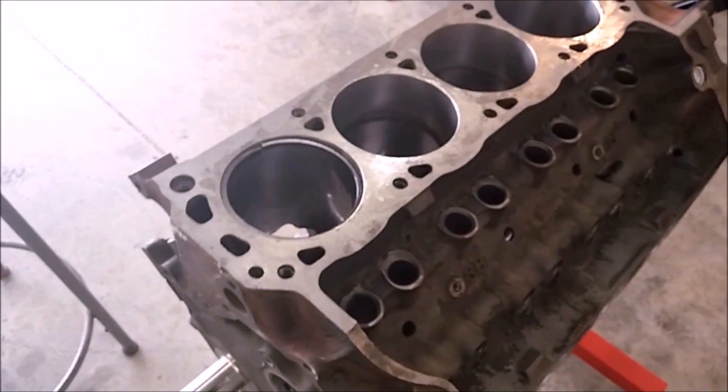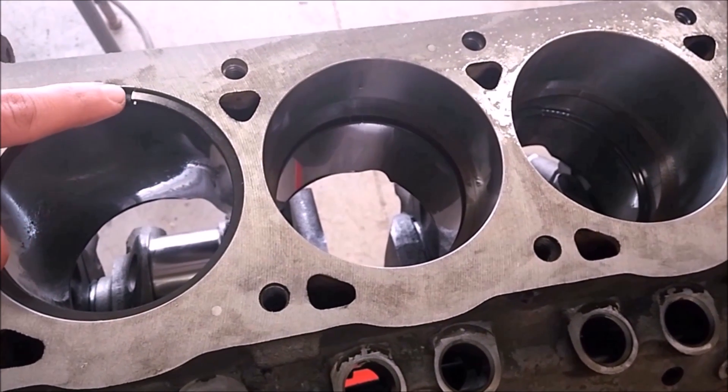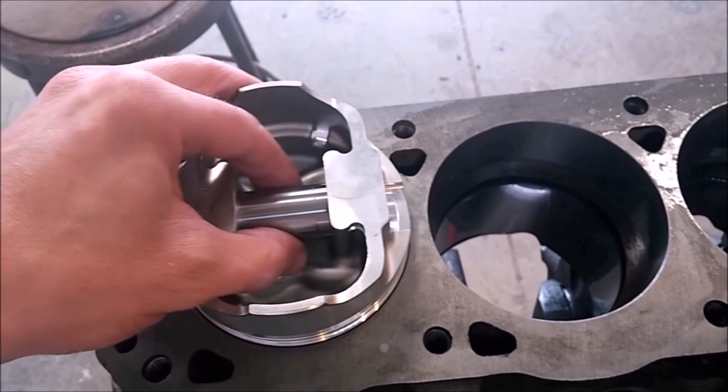Reoriented the block on the engine stand so that one bank is vertical. When you're setting the gap, you can use the piston to press the ring down square, pressing it an inch or an inch and a half down in.